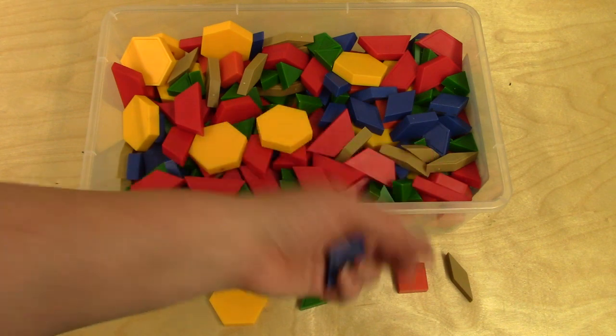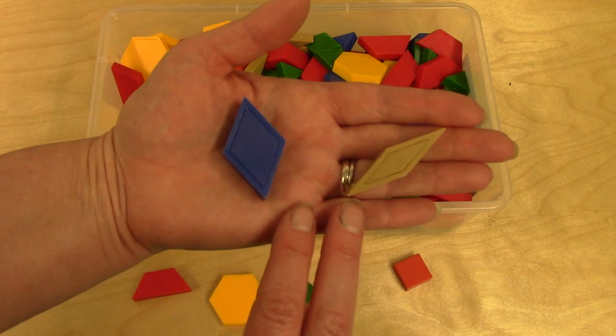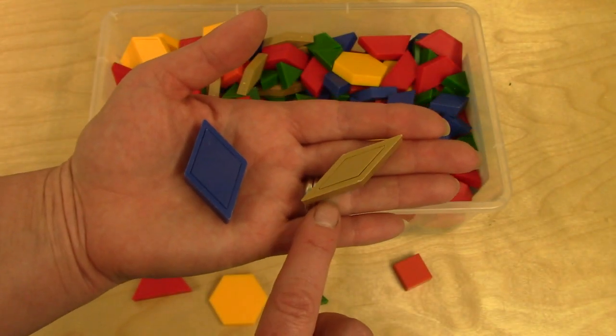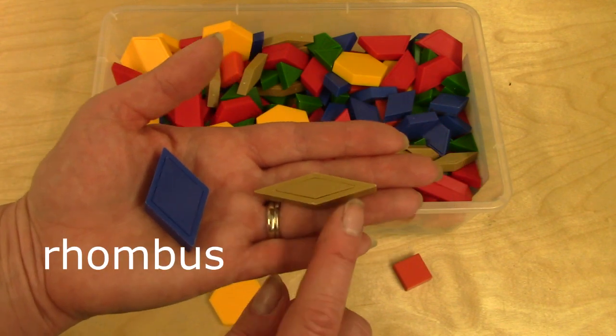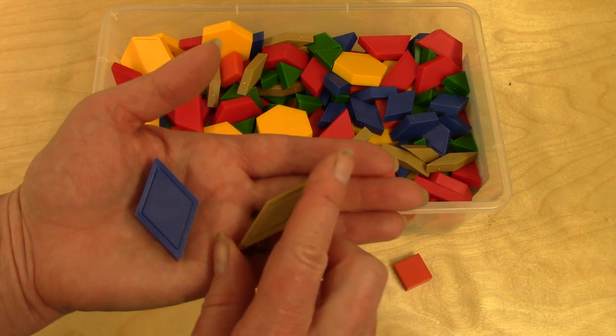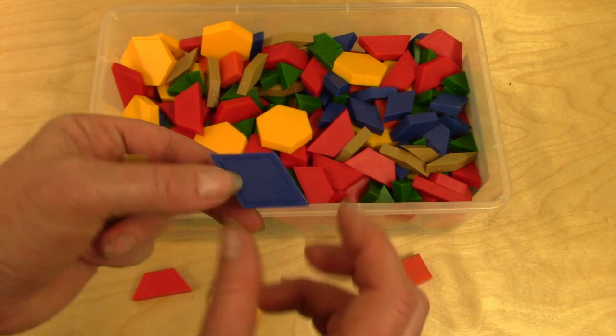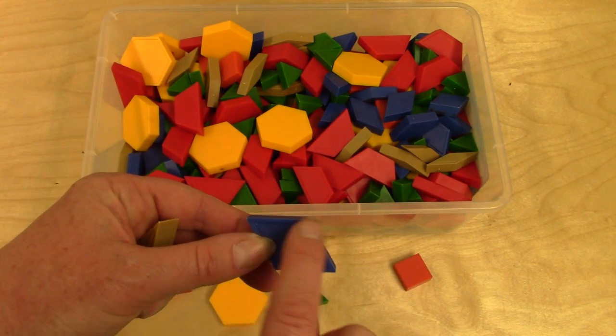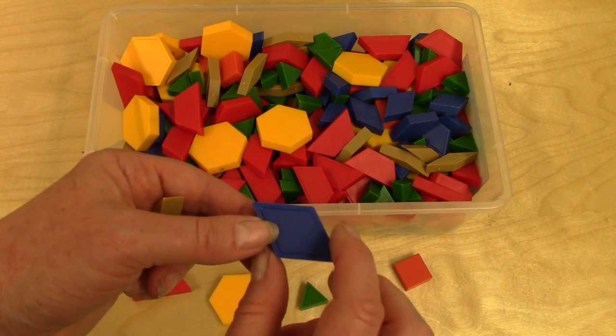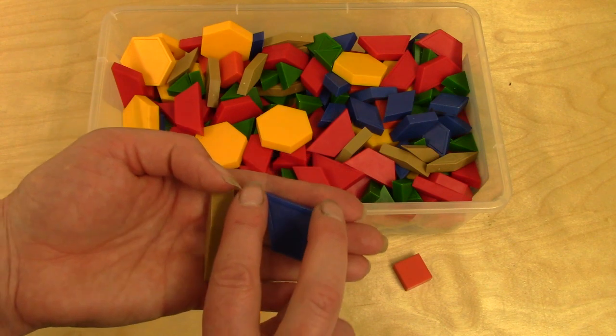This shape and this shape are very similar. Both the blue and the tan pieces are called rhombuses. A rhombus is a parallelogram with equal sides. They're both parallelograms. These two sides are parallel and these two sides are parallel, or they are the same distance from each other all the way along.